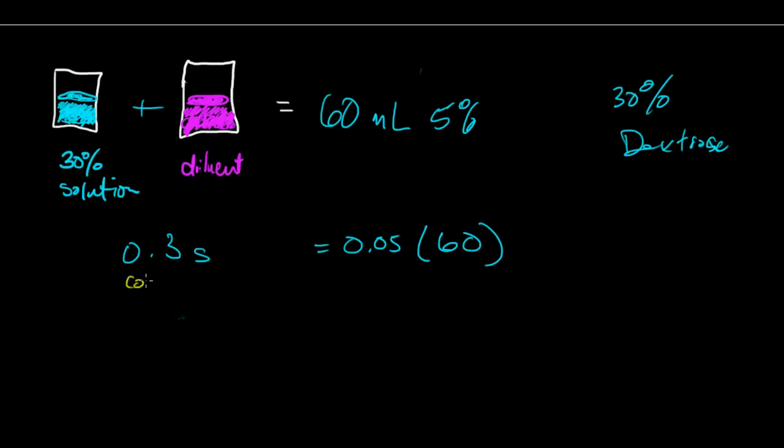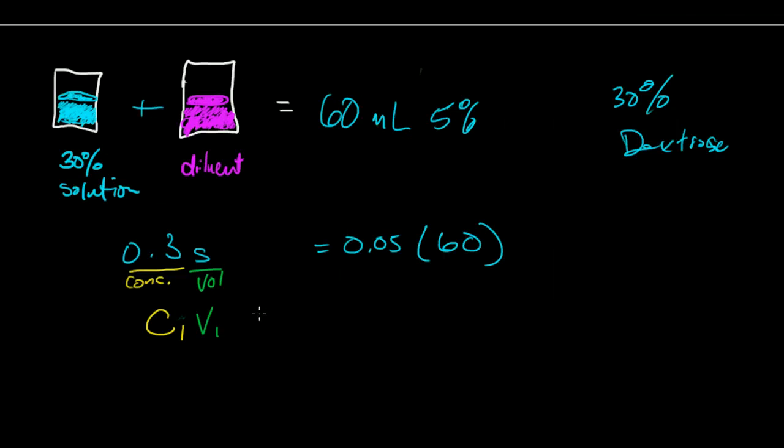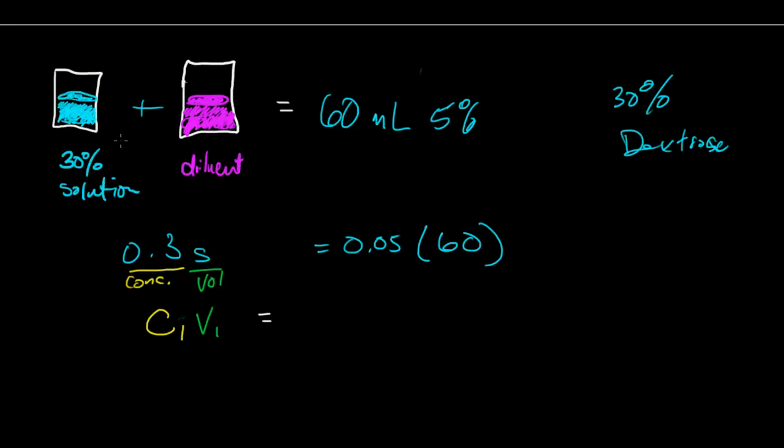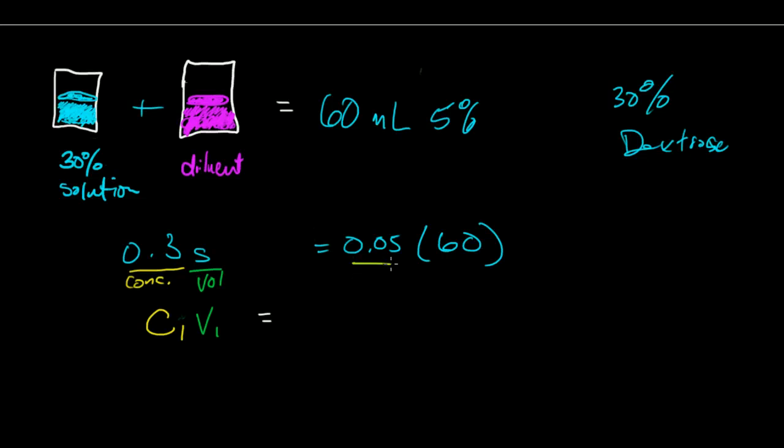So what we really have here is a concentration here and we'll call that C1 and a volume here that's our volume we'll call that V1, and all things considered that is going to be equivalent to a secondary concentration here that's a concentration we're going to call C2 and that'll be equivalent to our secondary volume here we'll call that V2.